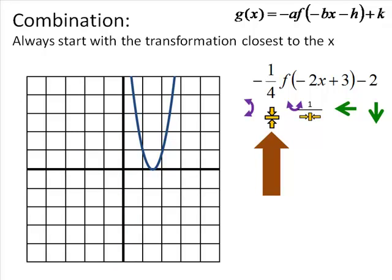And now we can move to the outside. Everything else that we do from now on is gonna be up and down, so that one-fourth means we're gonna smush toward the x-axis. The thing on the x-axis can stay there, but everything else is gonna smush down.